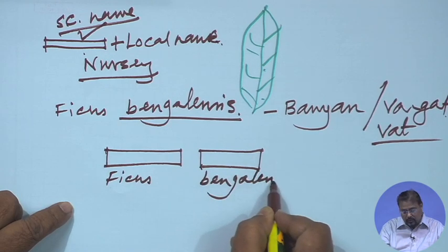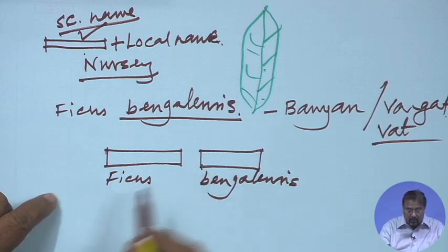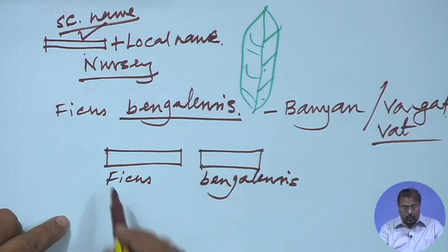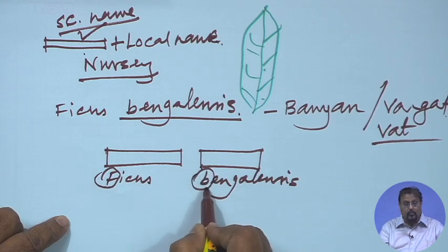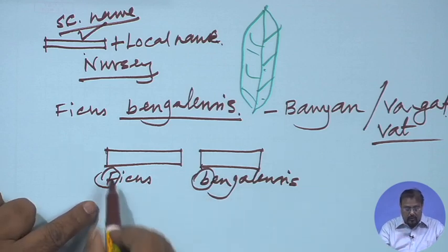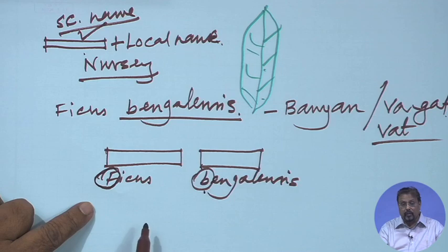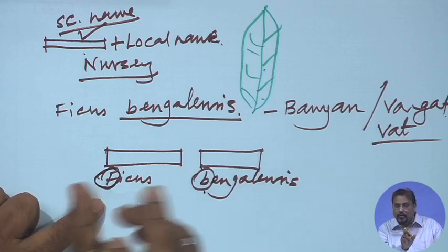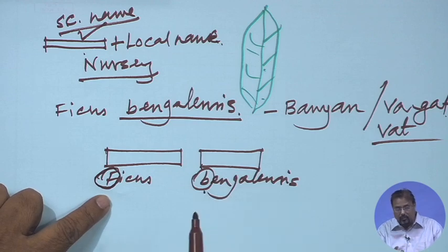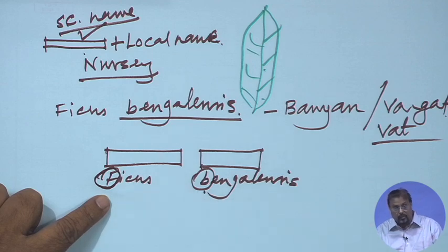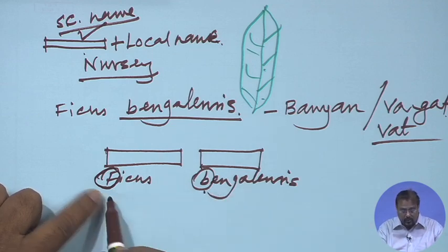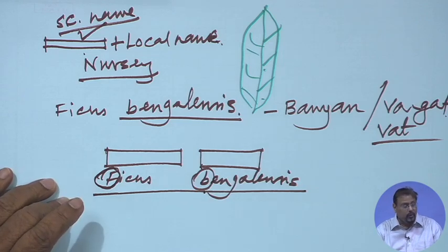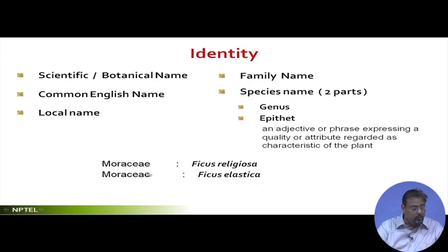So Ficus bengalensis would be written in italics. Another thing: unlike our personal names where the initial letters of both given name and surname are capitalized, here the first letter of the genus is capital but the second word is not capitalized. So whenever you find a name in the middle of a sentence written in italics in this form, you should think it is probably a tree name. You must know the family, focus on the genus, and especially focus on the epithet, which gives you a clue about that tree.